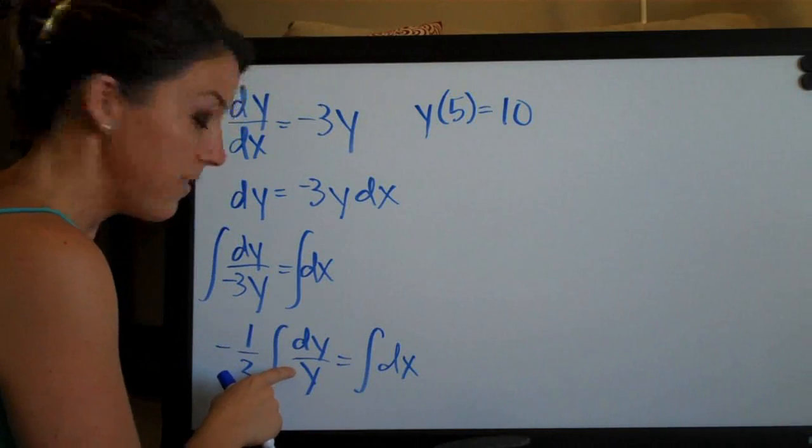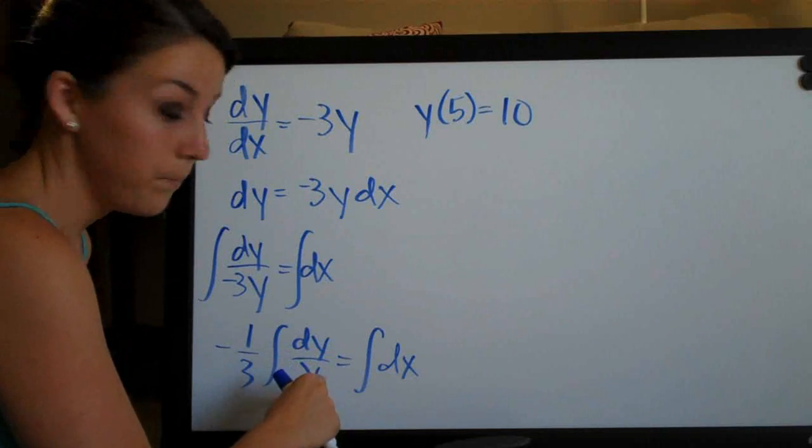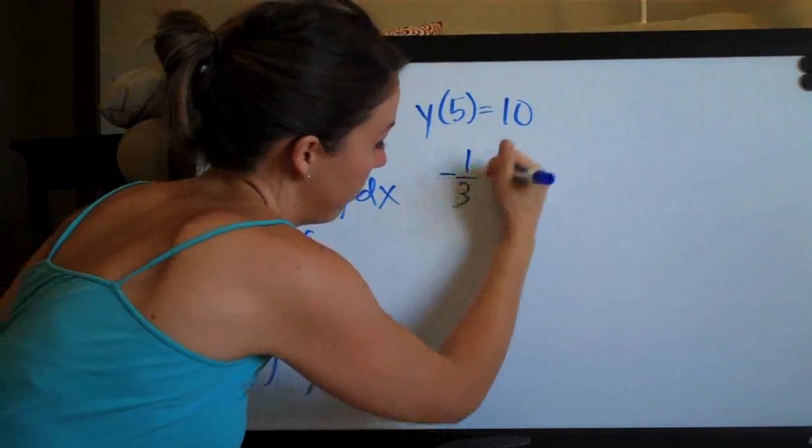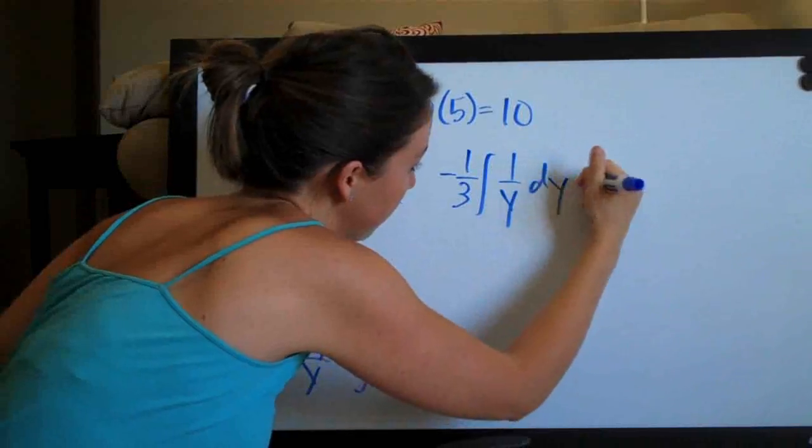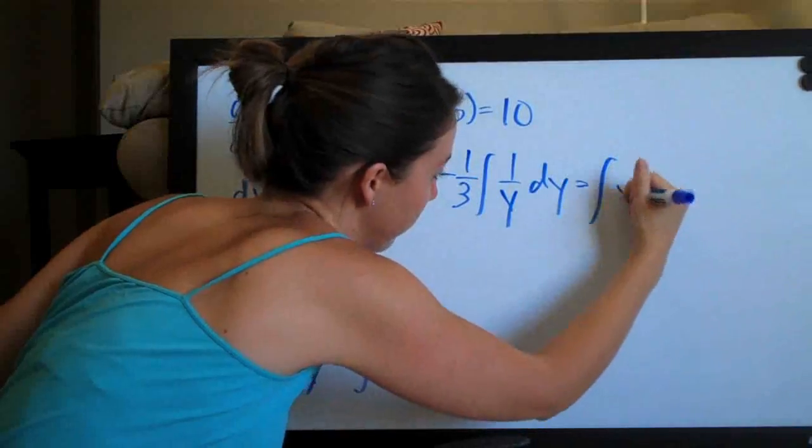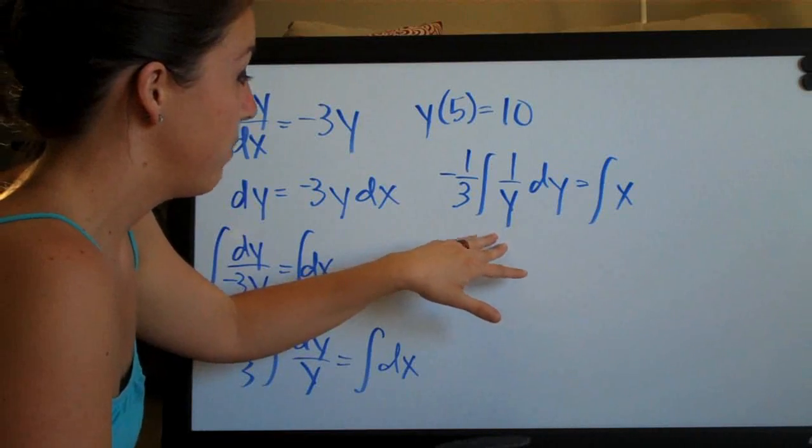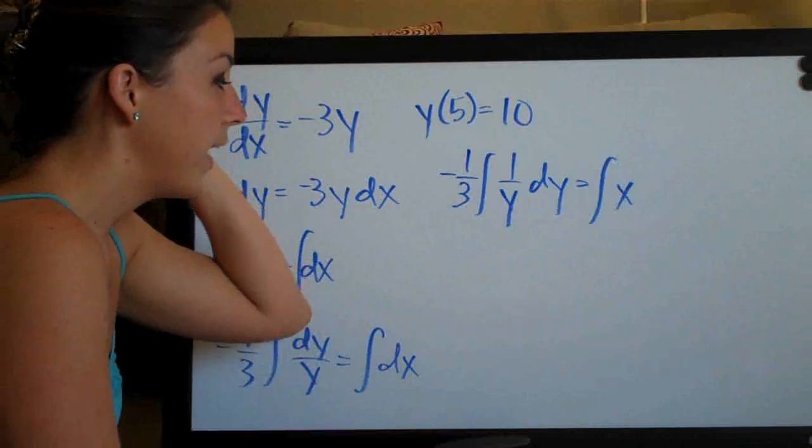To make this a little bit simpler, we can pull the dy out of this fraction and just make this 1 over y. So I will change this to negative 1/3 times the integral of 1 over y dy equals the integral of dx. So now that we have our variables separated, we have our integrals simplified, we go ahead and integrate.